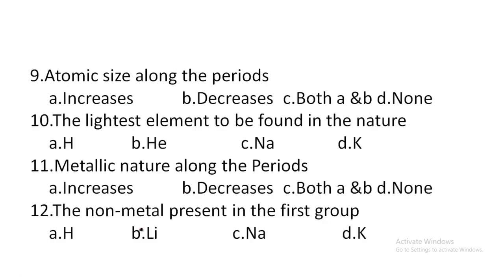Next one: atomic size along the periods — option A: increases, option B: decreases, option C: both A and B, option D: none of the above. Along the periods, atomic size decreases. Hence, option B is the correct answer.